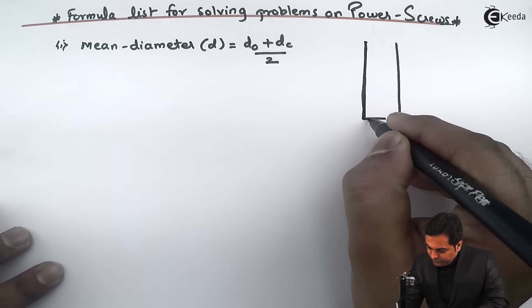Next formula is of ideal effort. That ideal effort is denoted by P0, that is equal to W into tan alpha. Here we are not considering friction. That is, this formula is neglecting friction.